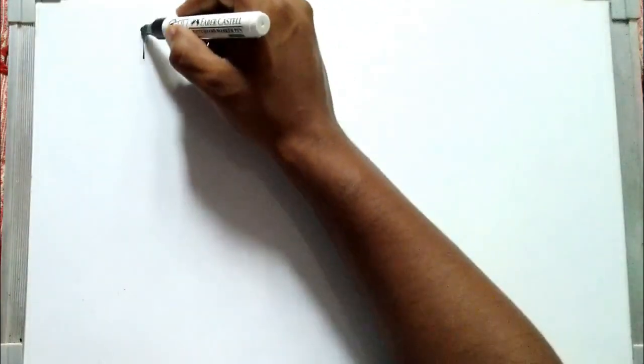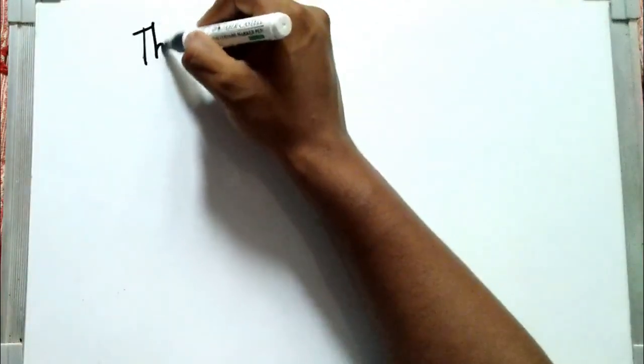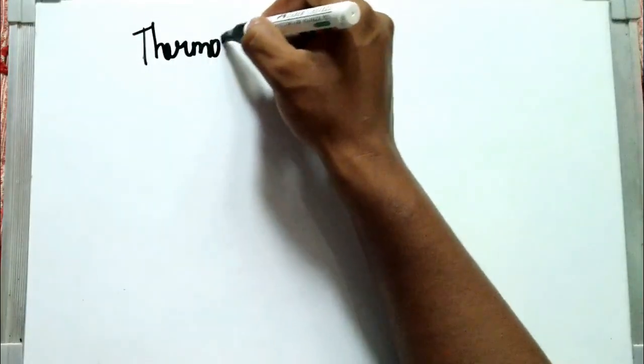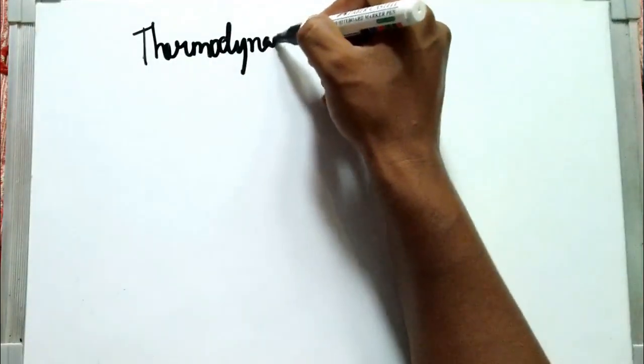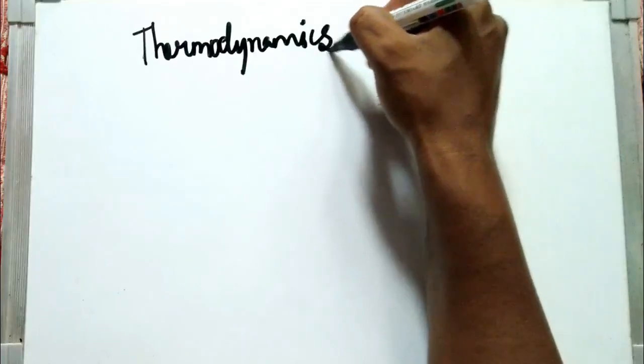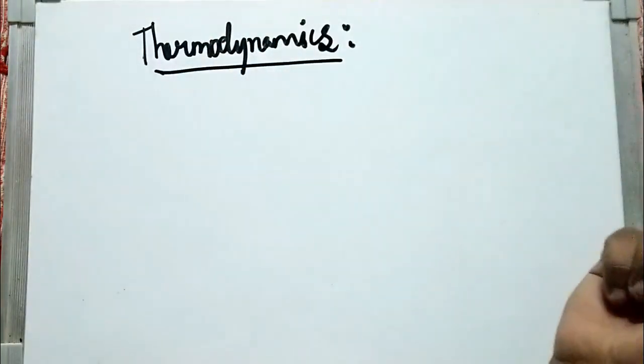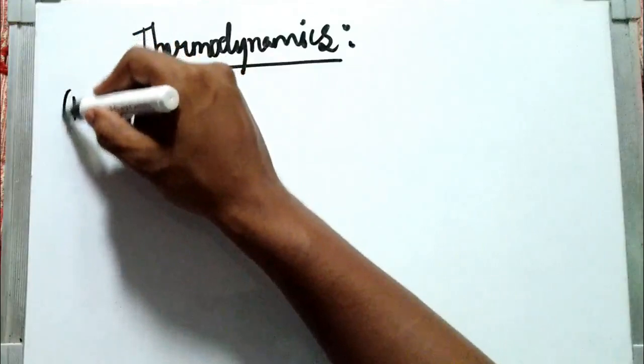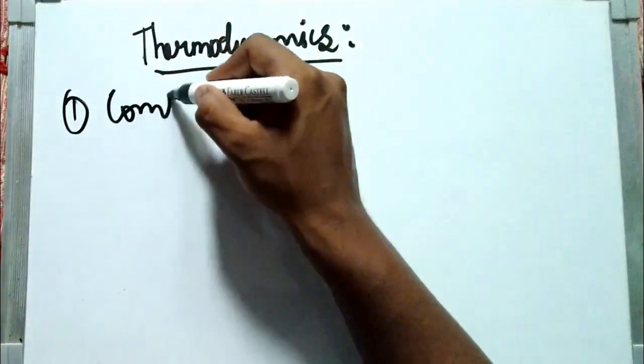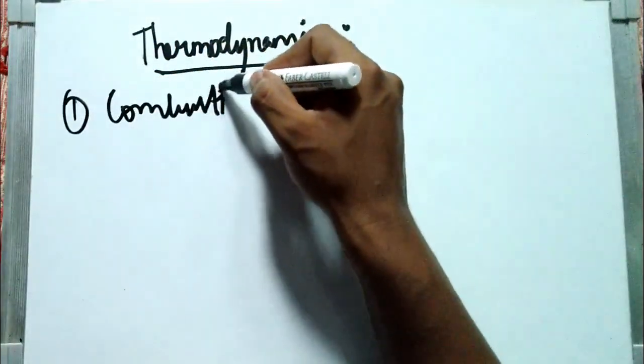Good morning, this is Avinash and today we'll discuss the thermodynamics of the reactions that take place in the blast furnace. In the last two lectures we discussed the overview of blast furnace iron making. Today we will see the thermodynamics of the reactions, and the first is the combustion of coke.